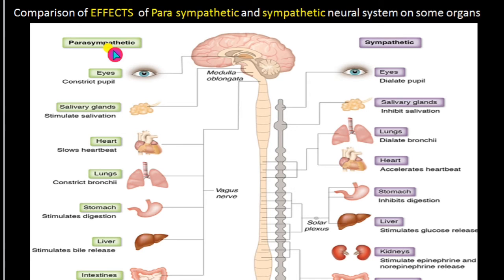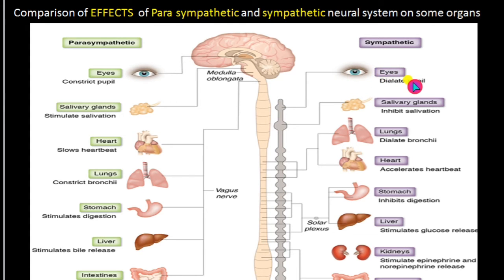In the sympathetic system, the neurotransmitter is noradrenaline. The pupil of the eye dilates, so more amount of light will enter into the eye so that the person can see the surroundings very clearly.